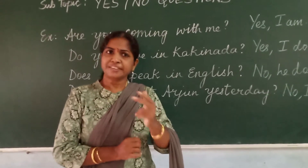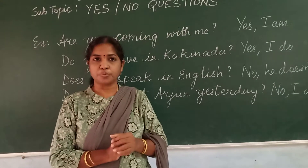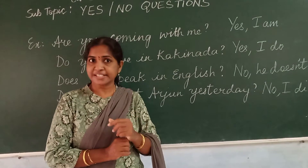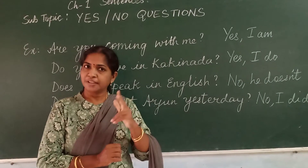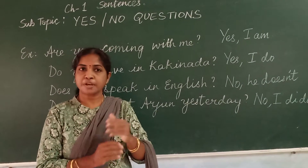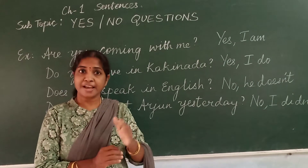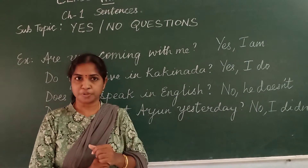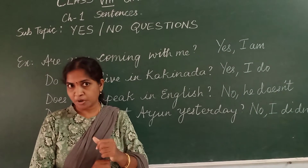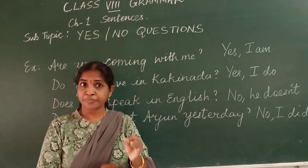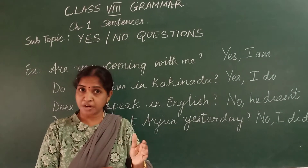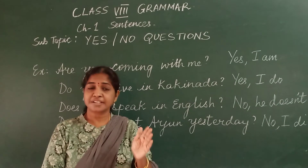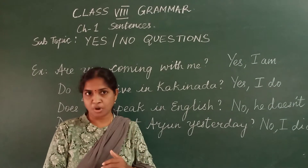Now, I think you are aware of what auxiliary verbs are. You have learned in your previous classes, 6th and 7th, what auxiliary verbs are. There are two kinds of auxiliary verbs: primary auxiliaries and modal auxiliaries. These auxiliary verbs are also known as helping verbs. Primary auxiliaries are: is, am, are, was, were, has, have, had, do, does, did.